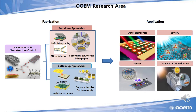Our research area can be exhibited like this. We fabricate various nanomaterials with nanostructure control. This fabrication and synthesis method includes top-down approaches and bottom-up approaches. Soft lithography, 2D material exfoliation, and secondary spot lithography are examples of our top-down approaches. We also use supramolecular self-assembly to create defect and wrinkle structures in the case of the bottom-up approach.